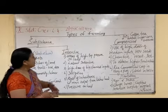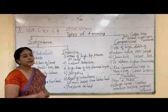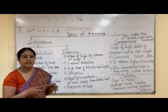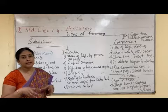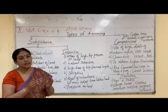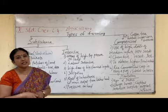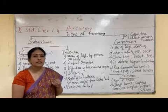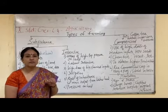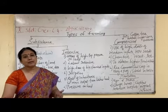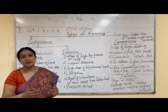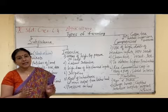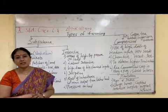The second type is intensive subsistence farming. 'Intensive' means more — so where more cultivation is done in a small piece of land, that is intensive subsistence farming. Usually this is done in areas where land is less and population is more, because less land is available for cultivation, so whatever land is available is intensely cultivated.